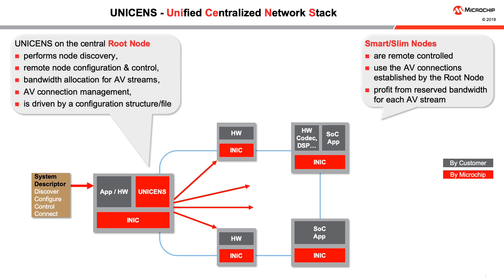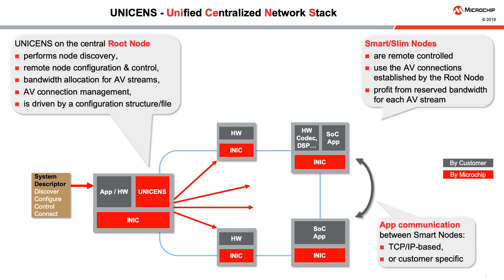The other nodes in the network are called remote nodes and are all controlled by the central root node, thus do not have any network management functions. They are either slim nodes without a microcontroller and software — such as small microphones in an advanced audio system — or smart nodes, which have their own microcontroller to run customer applications such as video displays and gateway devices. The remote nodes and their applications are remotely controlled, for example by tunneling I2C commands from the root node. They can take advantage of bandwidth reservation and connection management for all AV streams done by Unisense. Customers can implement their communication based on TCP/IP, in an F-block oriented way, or implement any customer-specific protocol.